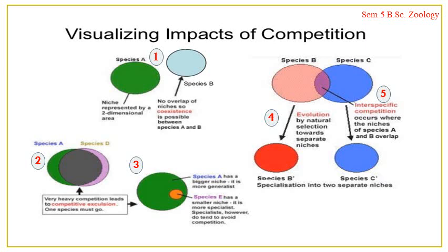Visualizing the different levels of competition: in the first figure, two species — species A in green and species B in light blue — are completely independent with no overlap, meaning no competition. Since they don't use any resources in common, they have no competition and can coexist for a longer period of time. Species A and B can coexist without any hindrance.